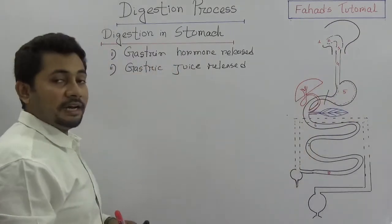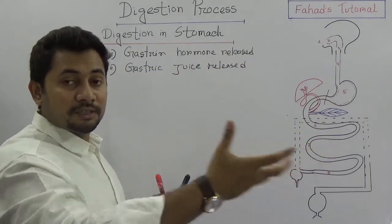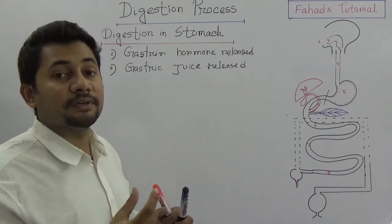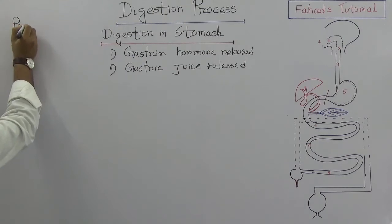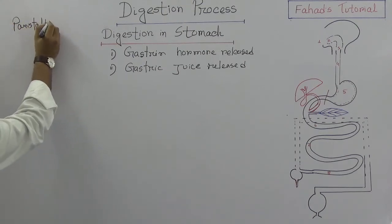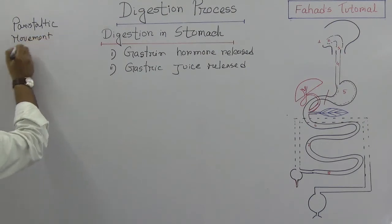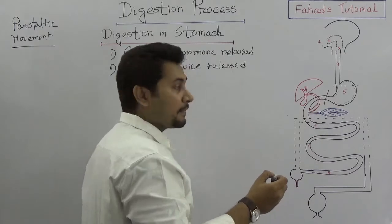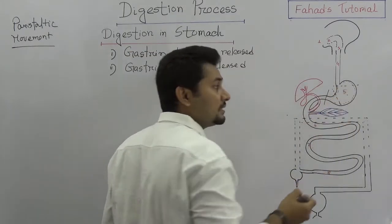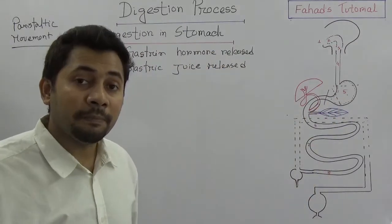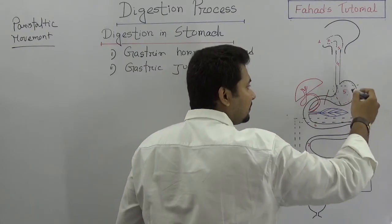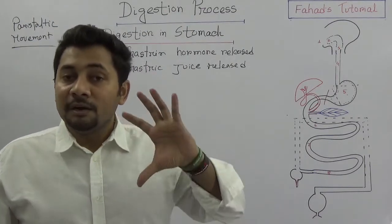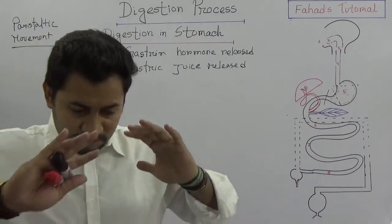When food particles come into the stomach, a peristaltic movement going forwards to backwards and backwards to forwards is always happening every 15 to 25 seconds, and that movement is known as peristaltic movement. The stomach has three parts: the upper part is the fundus, the middle is the body, and the lower part is the pylorus. The muscles perform peristaltic movement from fundus to pylorus and back, mixing food with gastric juice.